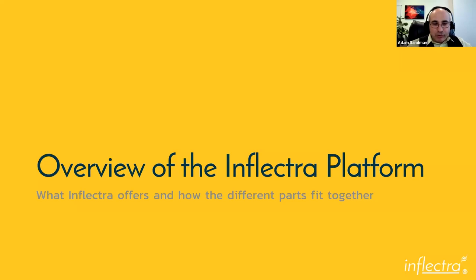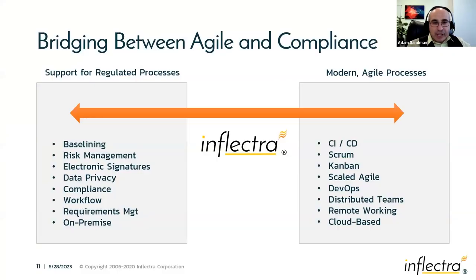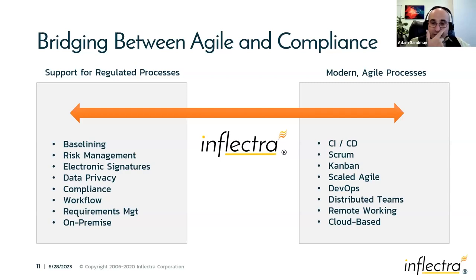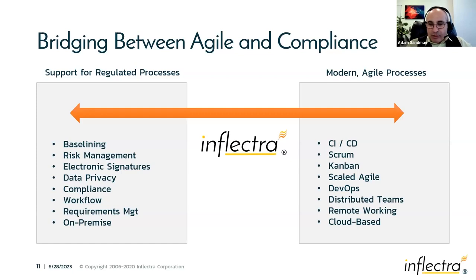Now let's talk about the Inflectra platform overall. The value proposition is bridging two worlds. On one side, those working with software, hardware, or hybrid systems want to deliver things more quickly — be more agile, more innovative, move to market faster, using continuous integration, continuous deployment, Agile methodologies like Scrum and Kanban, DevOps tools, and cloud-based systems for remote access. On the other side, we still have to prove compliance with all defined requirements, ensure the platform itself is validated, maintain proper workflows, data privacy (HIPAA compliance), and electronic signatures for Part 11.